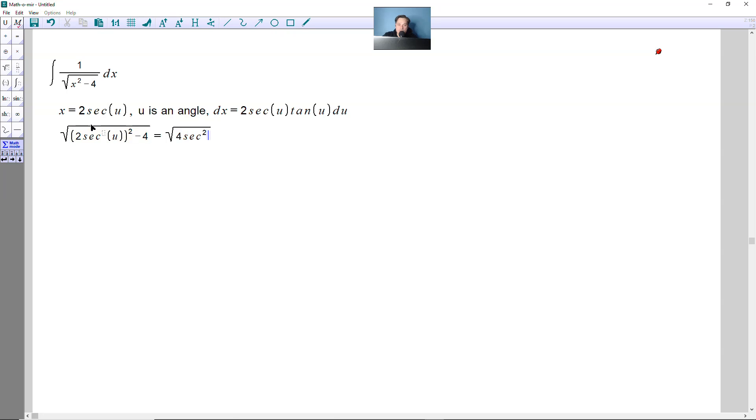4 secant squared of u, and then minus 4, and now here it's going to be 4 and then secant squared of u minus 1.